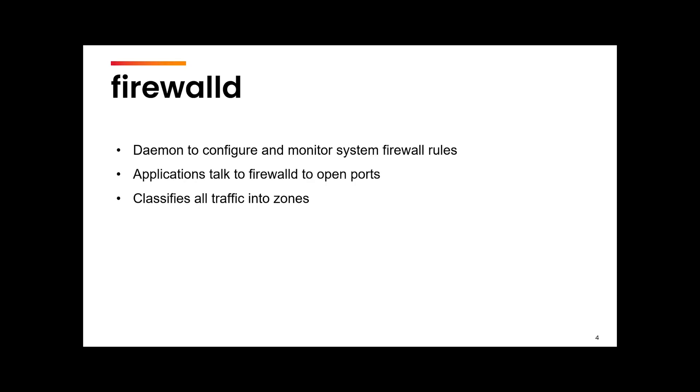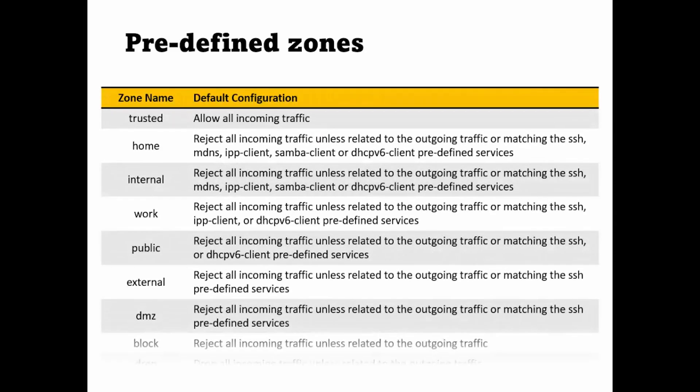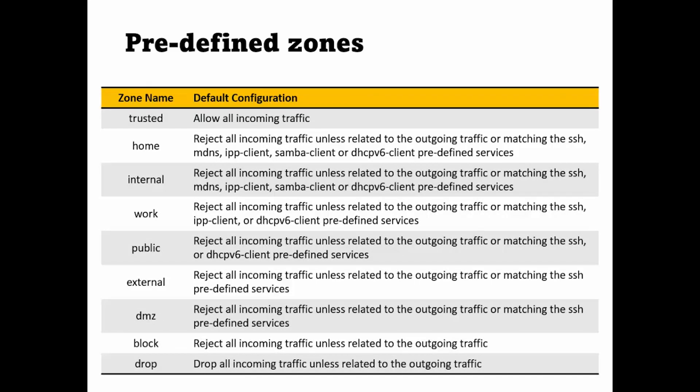Firewall D works by dividing all the incoming traffic into zones. Here is a list of the default zones that are there in the system when you install the firewall D package. For example, if you are working in the office or at home then your zone is different. If you are at a public space, the traffic coming from the outside network might not be from legitimate sources and people might want to hack into your system.